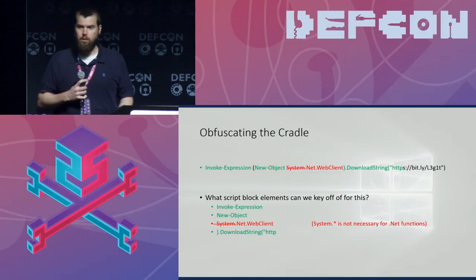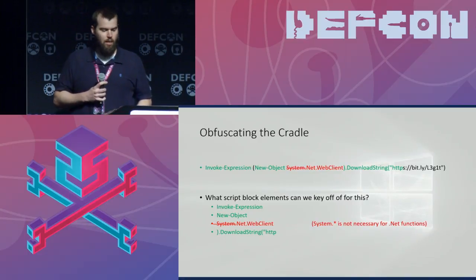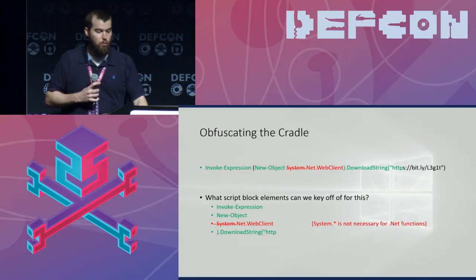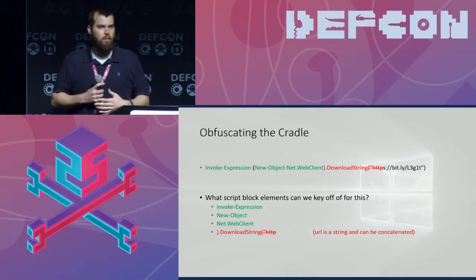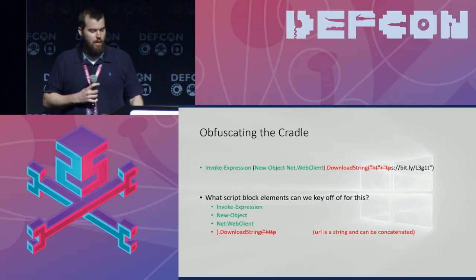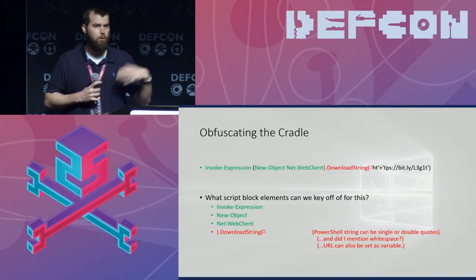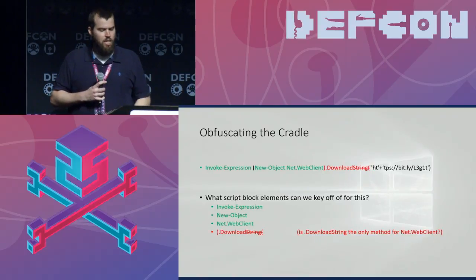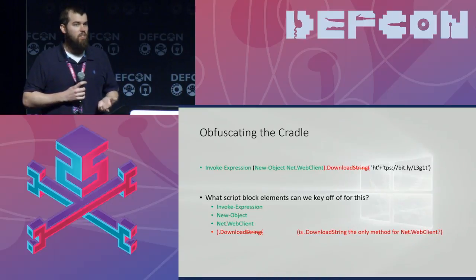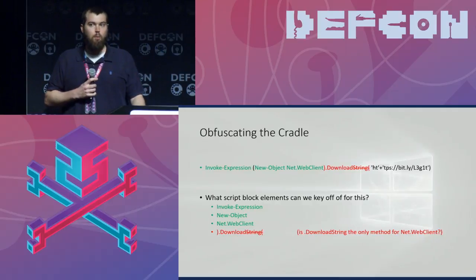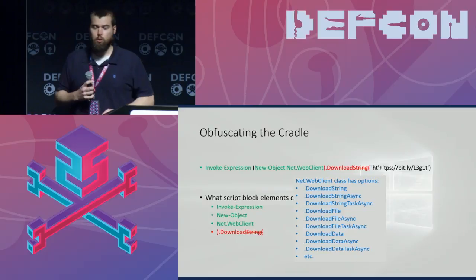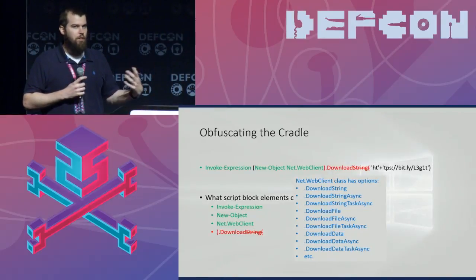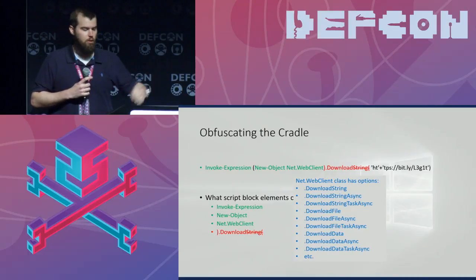First, "System." is not necessary in PowerShell — it will automatically prepend that for the .NET class, so remove it from both attacker command and defender triggers. The URL is a string — you can concatenate it inline, use single or double quotes, add whitespace, or set it as a variable, so remove the HTTP portion from the trigger. DownloadString is one of many methods in net.webclient — DownloadFile, DownloadData, etc. — so shorten the trigger to ".download" to capture all these options. Parentheses aren't required; you can set pieces in variables, so remove the parenthesis from the ".download" trigger.